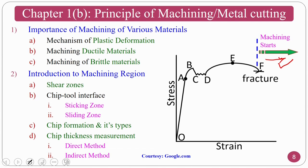We then cover the introduction to the machining region — what is the machining region, what are the zones, what is the shearing zone, chip-tool interface, what is the sticking zone, and what is the sliding zone. The sticking zone refers to where metal-metal interaction occurs, and in the sliding zone the chip moves and upgrades. We also deal with chip formation types — what are the different types of chips forming — and we measure both practically and theoretically the chip thickness using direct and indirect methods.